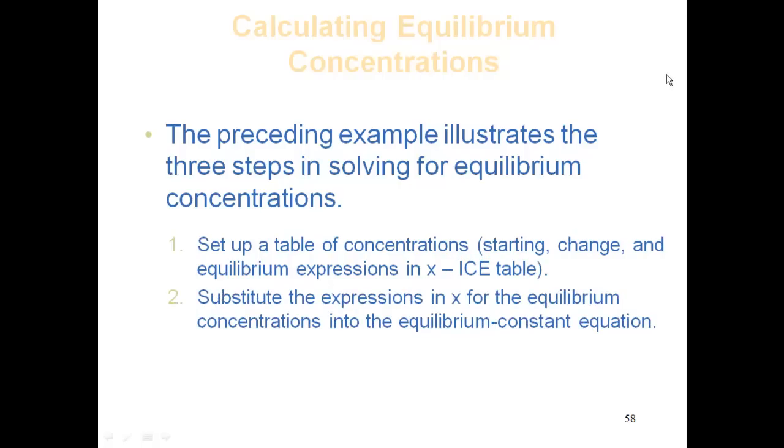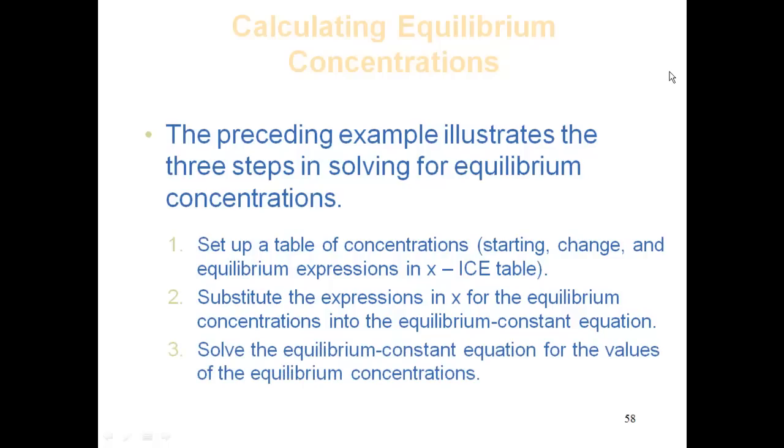Next, you will substitute the expressions of x into that equilibrium, concentrations into the equilibrium constant equation, meaning your Kc, Ka, Kb, Ksp, whatever the case may be. And then lastly, you will solve for that x. Solve for that equilibrium value of the concentrations and plug that back in and solve for the values we're looking for. So pretty much ICE table, K problem, solve for x.